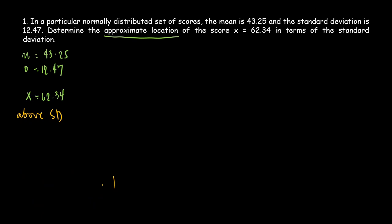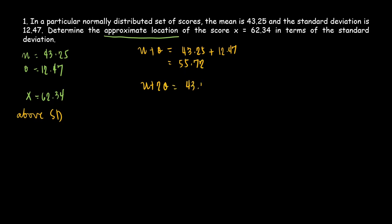So first, write down the set of scores. 43.25 plus 12.47 equals 55.72. Next, 43.25 plus 2 times 12.47 — so 2 times 12.47 is 24.94 — then 43.25 plus 24.94 equals 68.19.